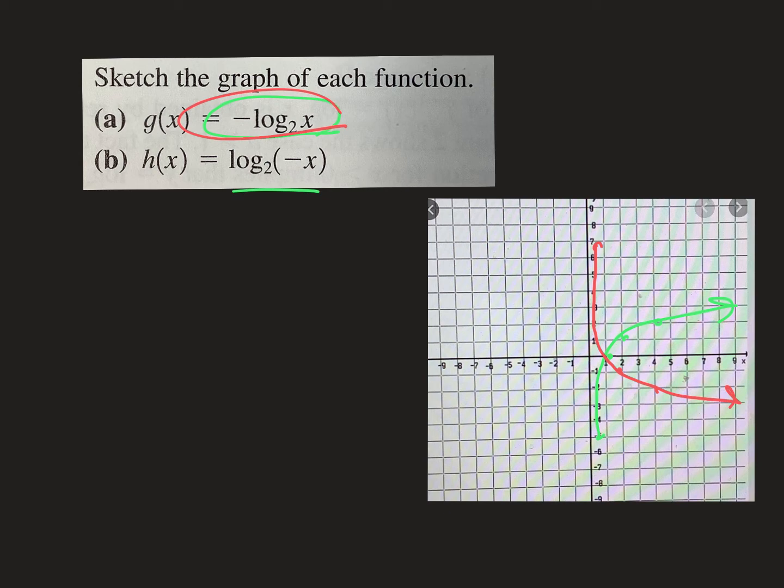Now the second one here has a negative inside. It reflects across the y, so the 1, 0 goes to negative 1, 0. The 2, 1 goes to negative 2, 1. The 4, 2 goes to negative 4, 2, and it's going to look just like this. So one of them is a reflection across the x with the negative in front. One's reflected across the y with the negative inside, just like we've done all year long.